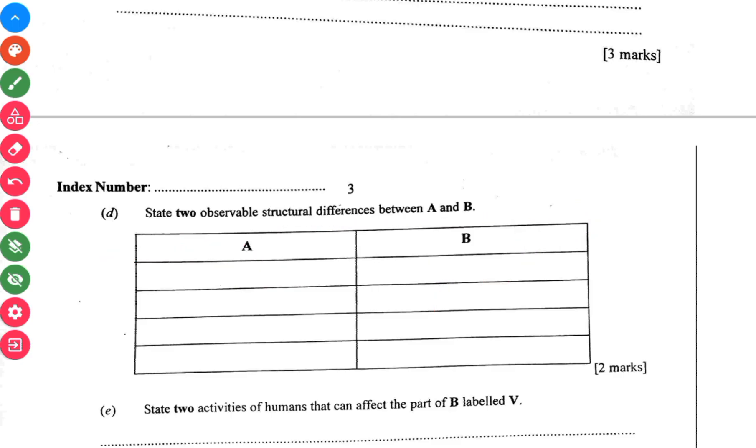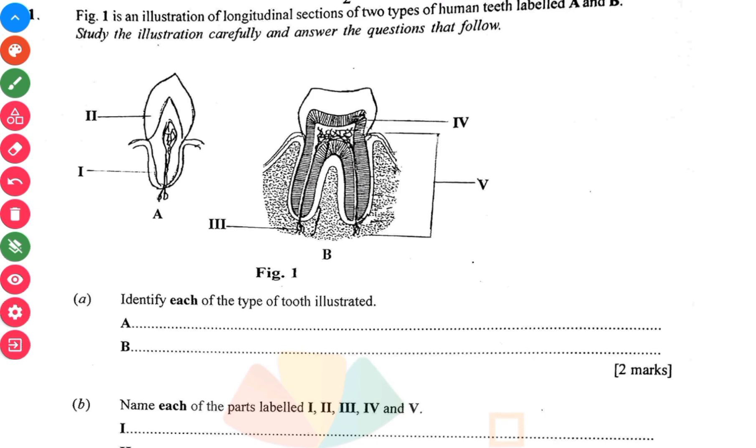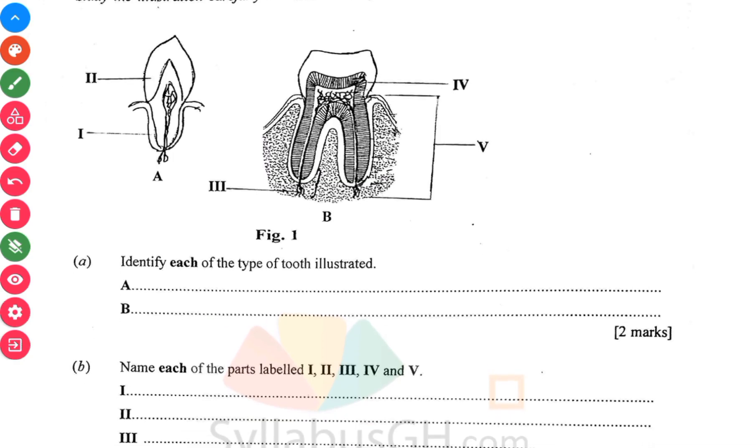E says state two activities of humans that can affect the parts labeled V. The part V would be the roots. The first thing that can affect the root is eating too hot or cold foods. The second one is not ensuring good oral hygiene. When your tooth is affected by gum disease, it can affect the roots leading to the removal of the actual tooth.